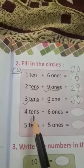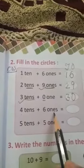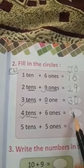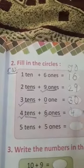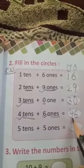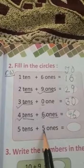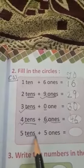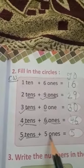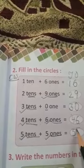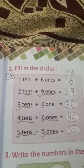Next: 4 Tens plus 6 Ones. अब Tens कितने हैं हमारे? 4. Tens के नीचे 4. और Ones कितने हैं? 6. Ones के नीचे 6. क्या नंबर बन गया हमारा? 46. Next: 5 Tens plus 5 Ones. 5 Tens कितने हैं? 5, Tens के नीचे 5. Ones कितने हैं? 5, Ones के नीचे 5. तो क्या नंबर बन गया? 55. इसी तरह बेटा, यह next line आपका homework है।